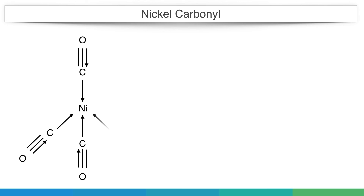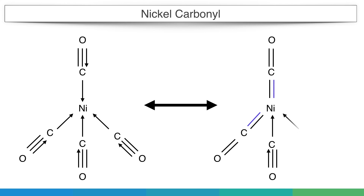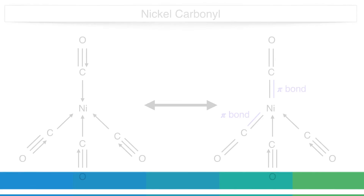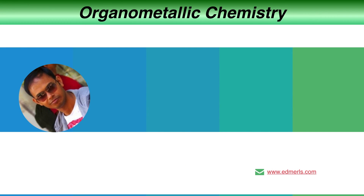The bond between nickel and the carbon monoxide groups is not a pure sigma bond — it also involves pi bonding. From the structure of nickel tetracarbonyl, it is clear that 2 out of 4 carbon monoxide groups are linked to nickel through sigma bonds, and the remaining 2 are linked through multiple bonds, that is, 1 sigma and 1 pi bond.